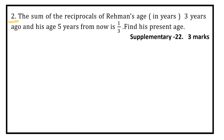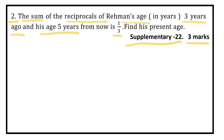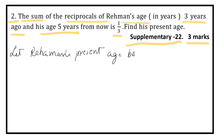The second problem is taken from the supplementary exam 2022 and it is a 3 marks question. The question is: the sum of the reciprocals of Rahman's age 3 years ago and his age 5 years from now is 1 by 3. Find his present age. Let Rahman's present age be X years.